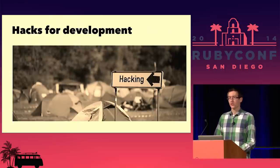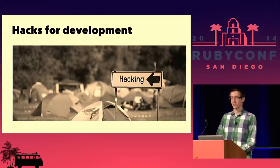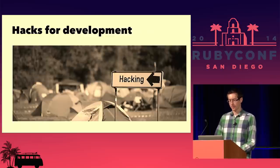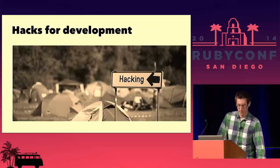Those are examples of runtime checks. We also try to add hacks during development time — the earlier we can catch an issue, the better. We don't want to catch things in production if we don't have to. So we have lots of little hacks at development time as well.